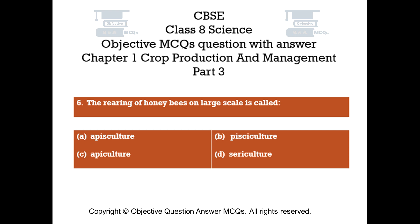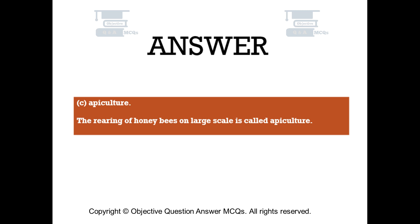Question number 6. The rearing of honeybees on large scale is called. Option A: Apis culture. Option B: Pisci culture. Option C: Apiculture. Option D: Sericulture. The right answer is option C — Apiculture. The rearing of honeybees on large scale is called apiculture.